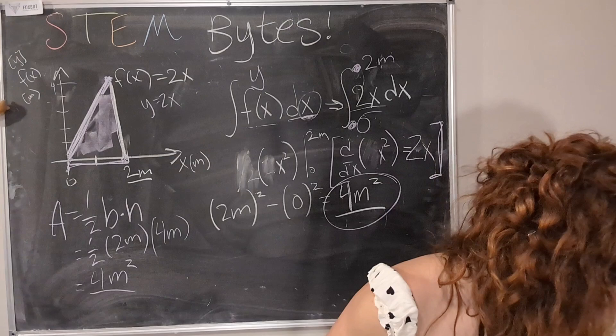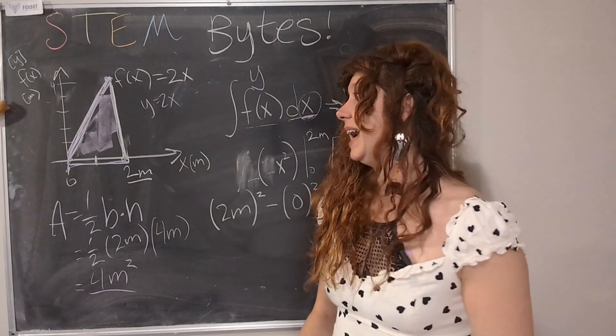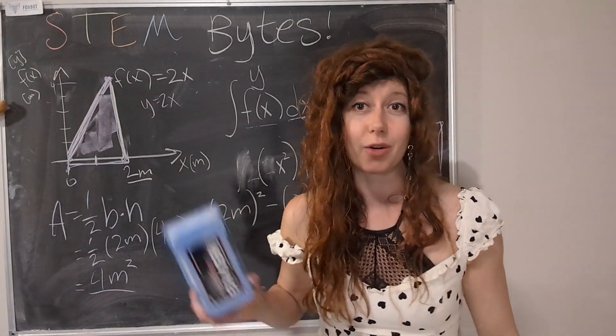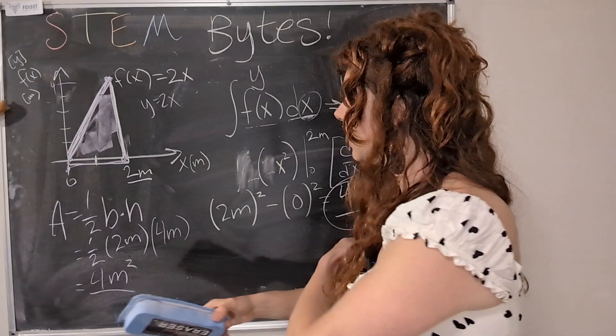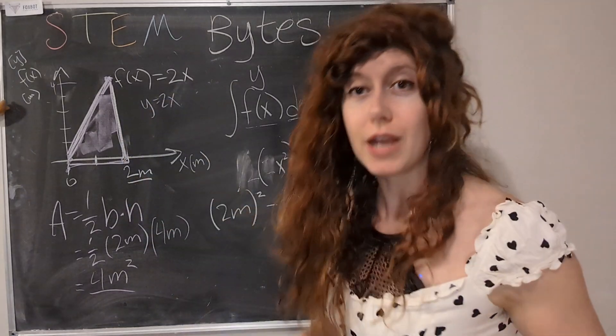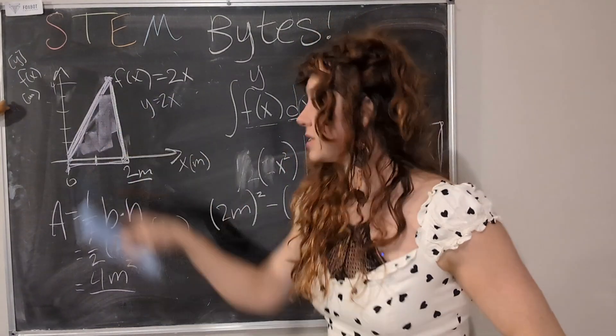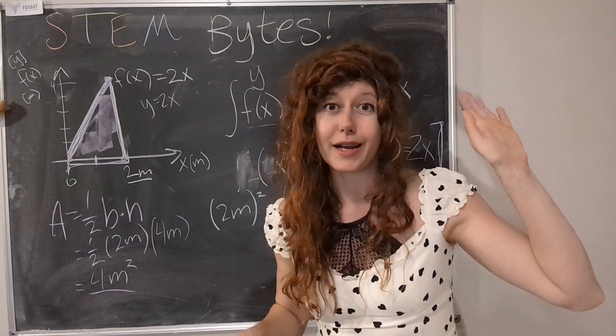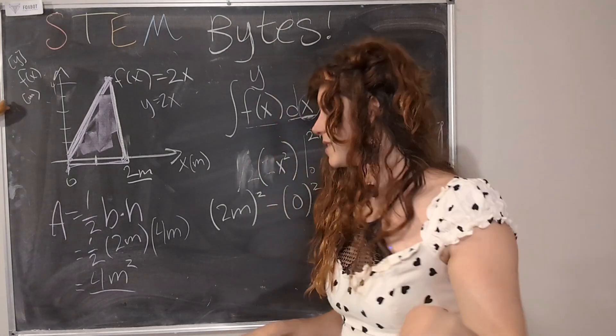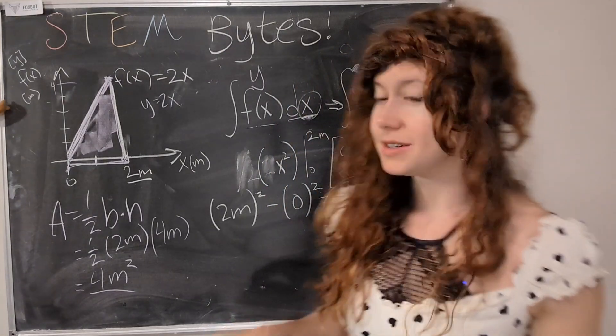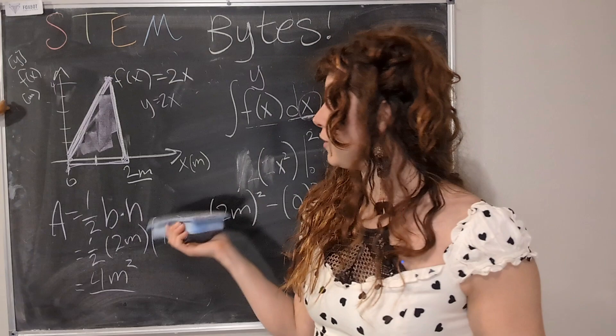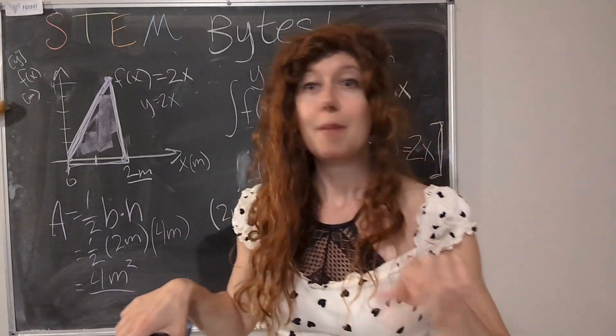And I know you're like, okay, I could walk that. I don't need this funky f of x shenanigans. I can measure this. And also, excuse me, I know the area of a triangle. Yes, you're very smart. And I know that. And that's why I wanted to give you a simple example to start with.